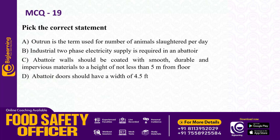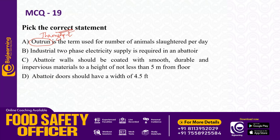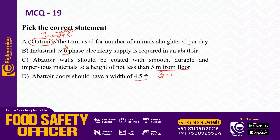Pick the correct statement. Option A: outrun is the term used for number of animals slaughtered per day — outrun, throughput. Option B: industrial two-phase electricity supply is required in an abattoir. Option C: abattoir walls should be coated with smooth, durable and impervious materials to a height of not less than 3 meters from the floor — not 5 meters. Option D: abattoir doors should have a width of 4.5 feet.